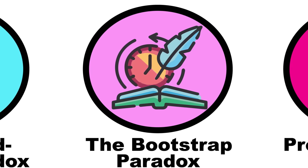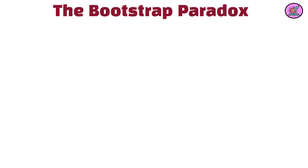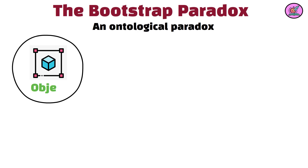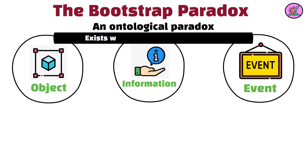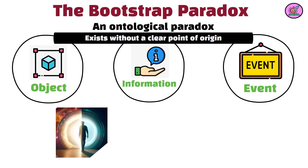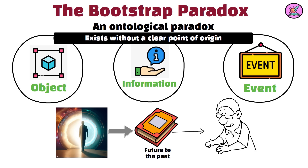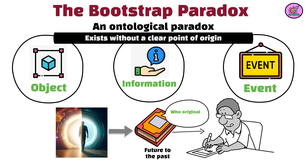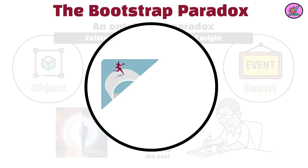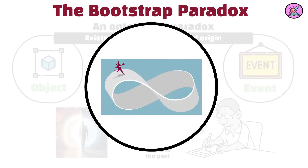The bootstrap paradox, also known as an ontological paradox, happens when an object, information, or event exists without a clear point of origin. For example, imagine a time traveler brings a book from the future to the past, and that book becomes the inspiration for the original author to write it. The question arises: who originally wrote the book? The paradox creates a circular loop of causality with no clear beginning.